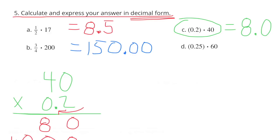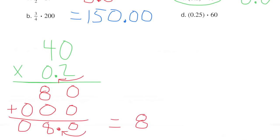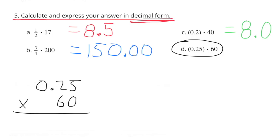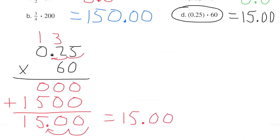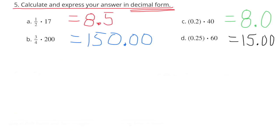C. 2 tenths times 40 or 40 times 2 tenths. 40 times 2 tenths is 8 or 8.0. D. 25 hundredths times 60 or .25 times 60. 25 hundredths times 60 equals 15 or 15.0.